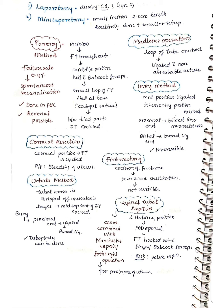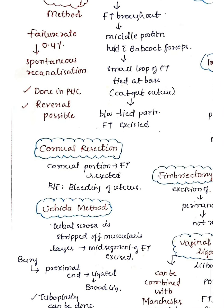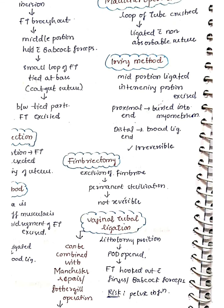In Pomeroy's method, an incision is given and the fallopian tube is brought out. The middle portion is held with Babcock's forceps, a small loop is tied at the base with catgut sutures, and the portion between the tied parts is excised. The failure rate is 0.4% due to possible spontaneous re-canalization. It can be done at a PHC and is considered reversible, making it a commonly used method.